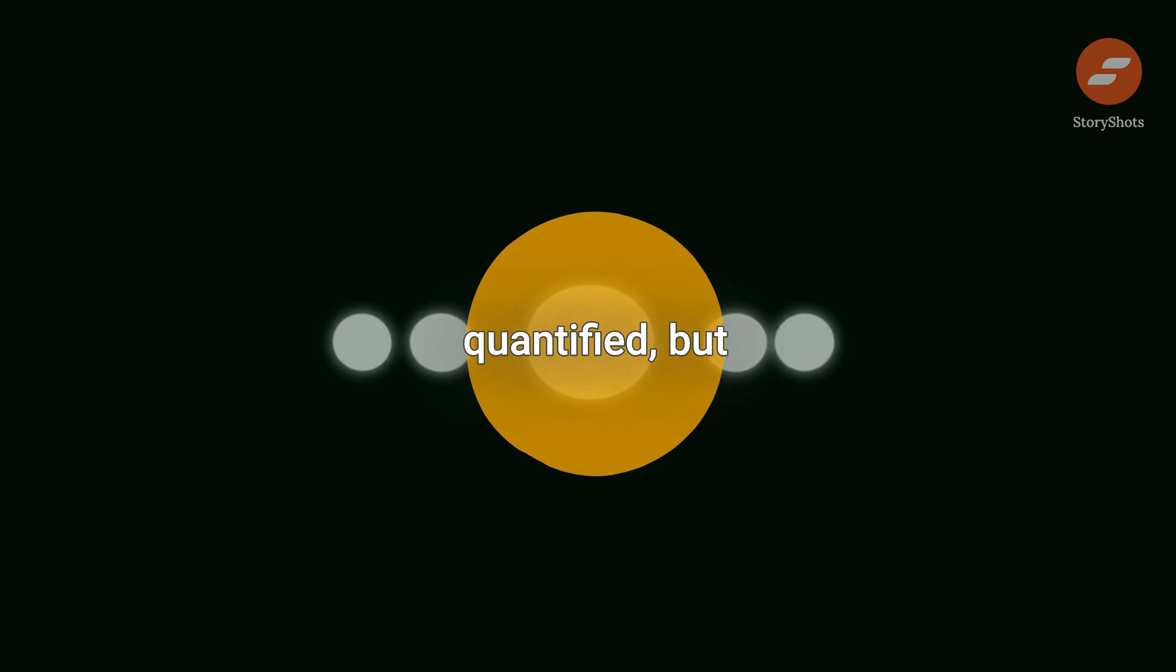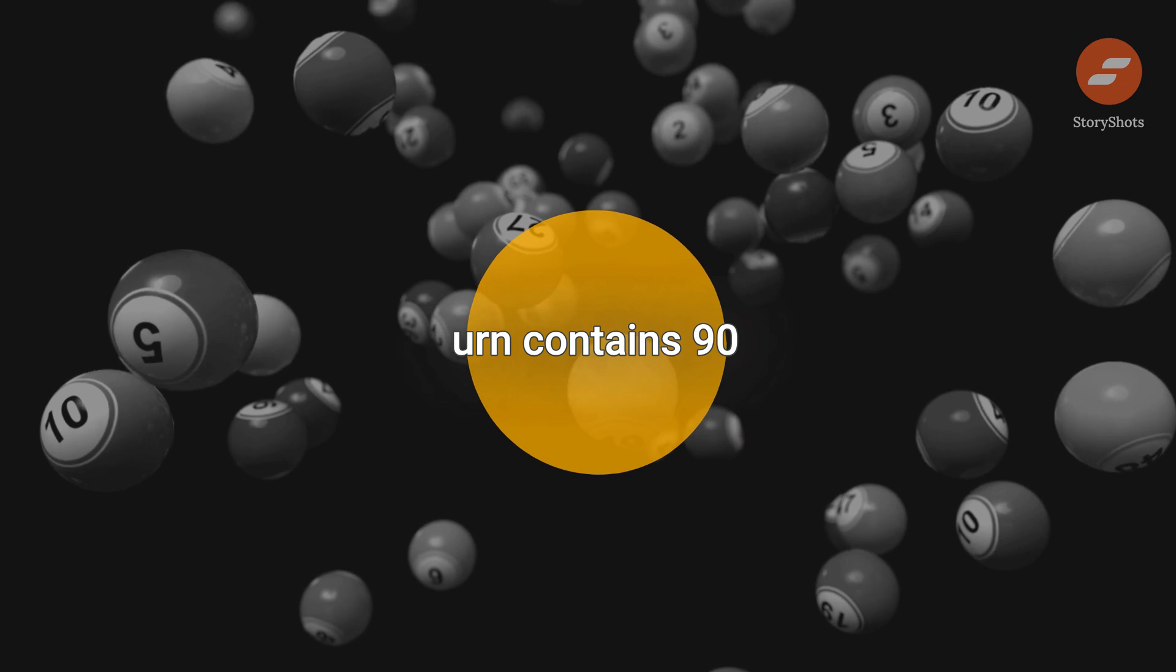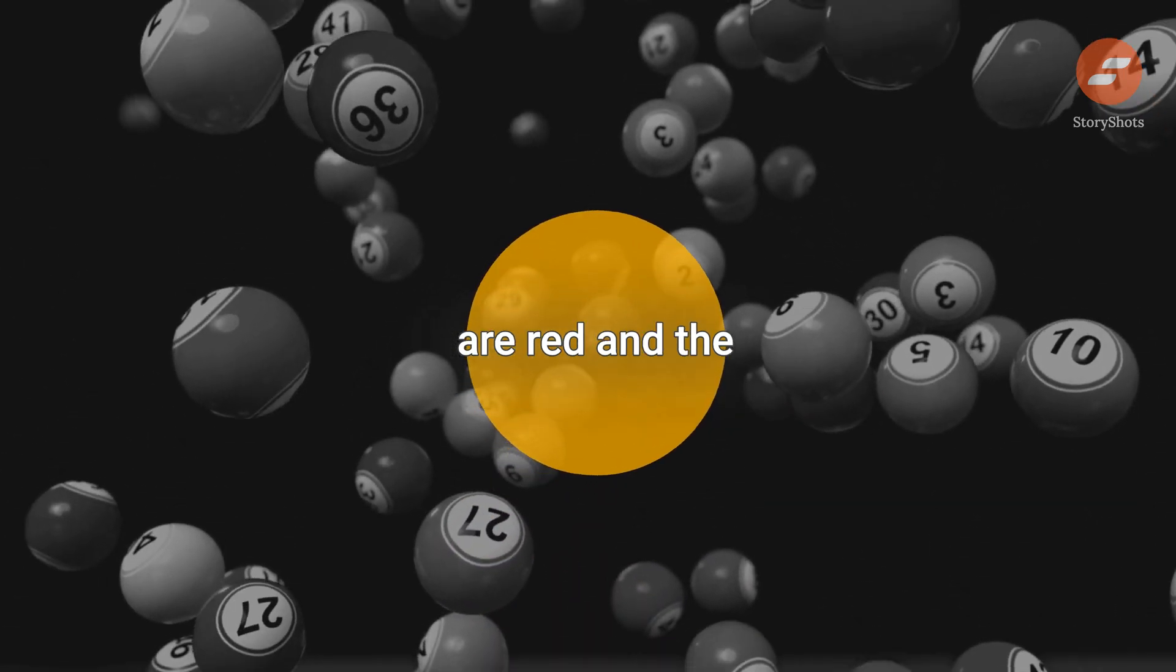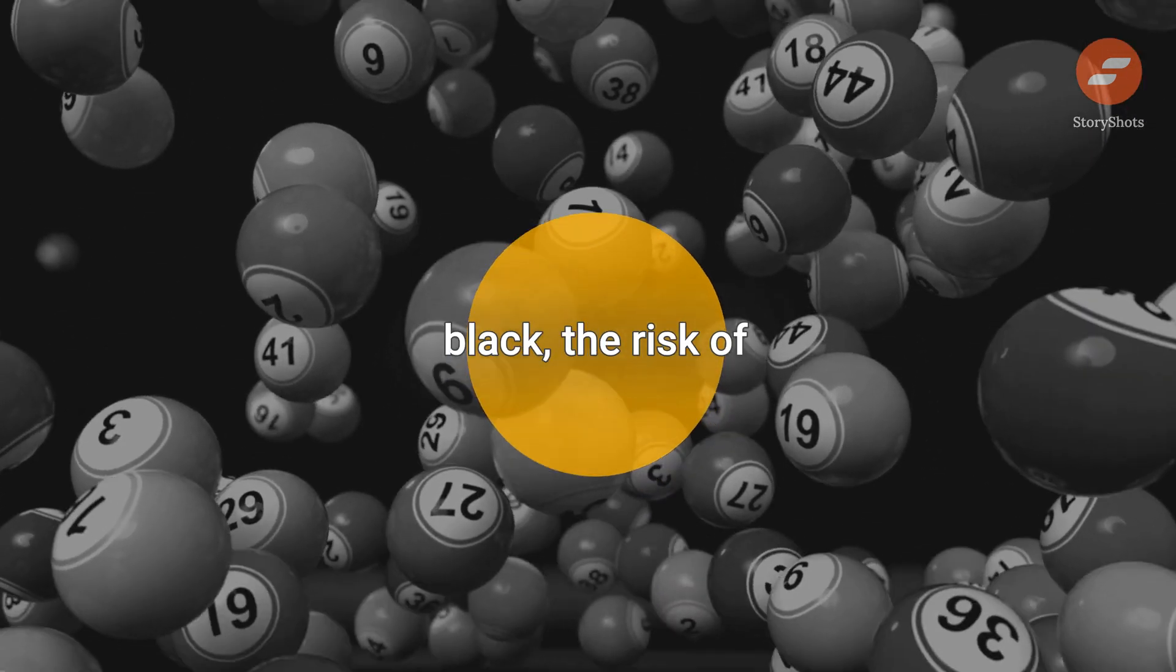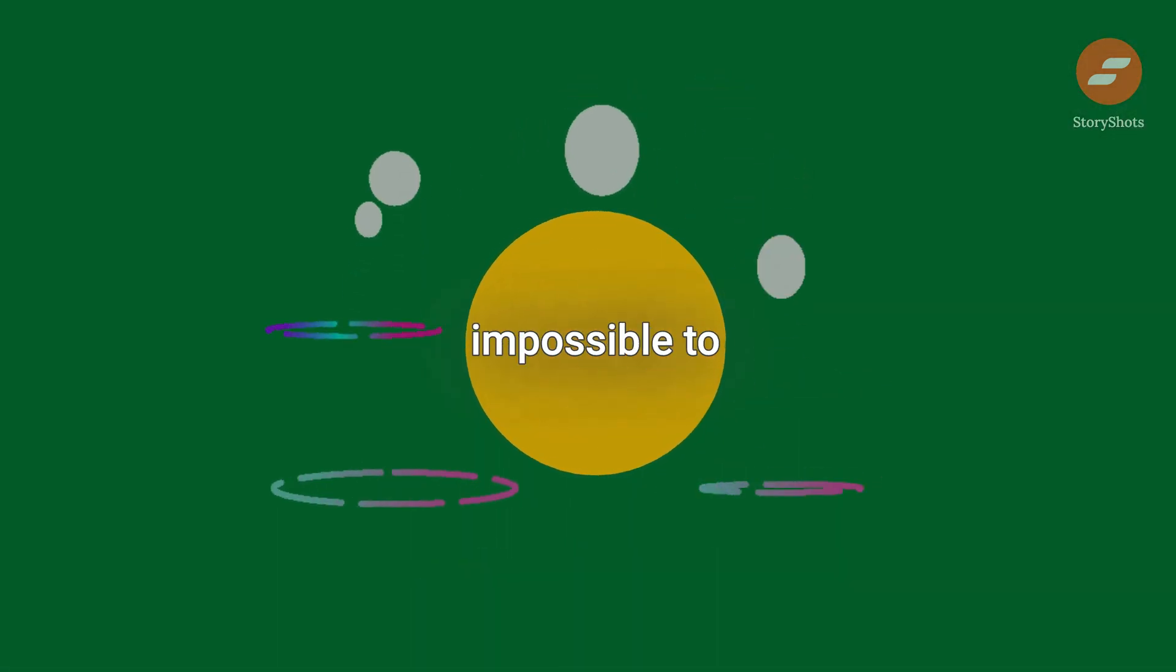Risk can be quantified, but uncertainty cannot. For example, if an urn contains 90 balls, 30 of which are red and the rest yellow and black, the risk of not pulling out a red ball is 2 out of 3. However, it is impossible to quantify the chance of pulling out a black ball.